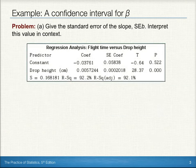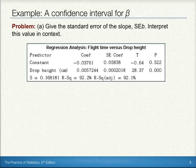Now, first of all, let's give the standard error of the slope, SE sub b, and interpret that value in context.